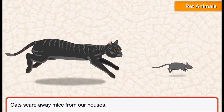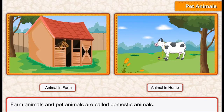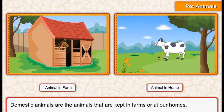Farm animals and pet animals are called domestic animals. Domestic animals are the animals that are kept in farms or at our homes.